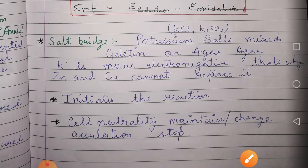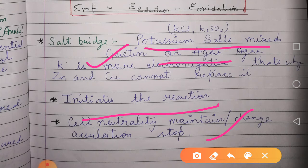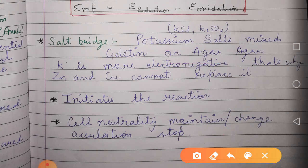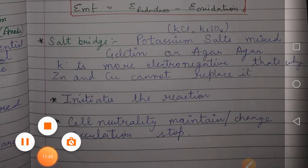The salt bridge is the bridge that initiates the reaction, maintains neutrality, and prevents charge accumulation. It is made up of potassium salts mixed with gelatin and agar-agar. Potassium salts are used because potassium is more electropositive than most other elements. This completes our topic — we'll meet in the next class. Thank you, take care.